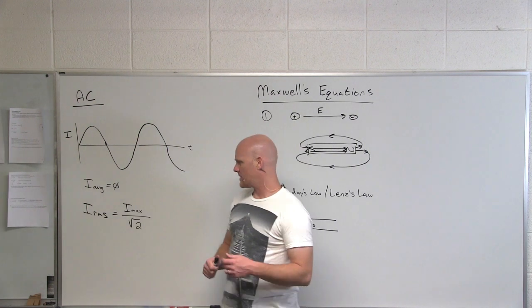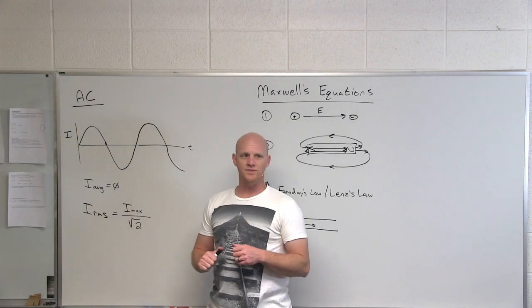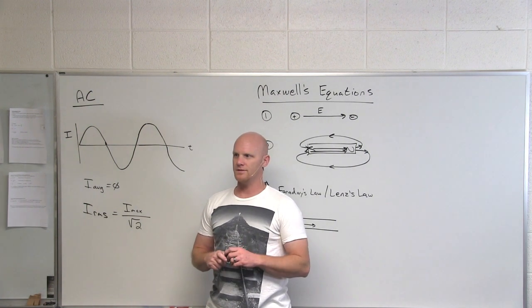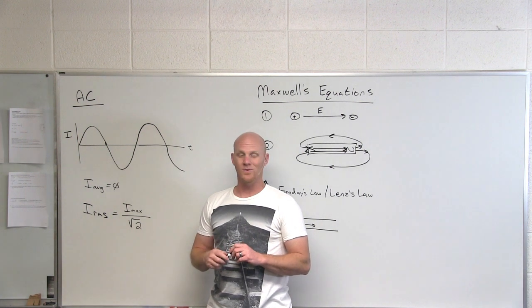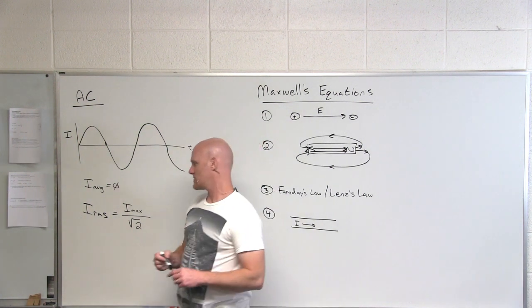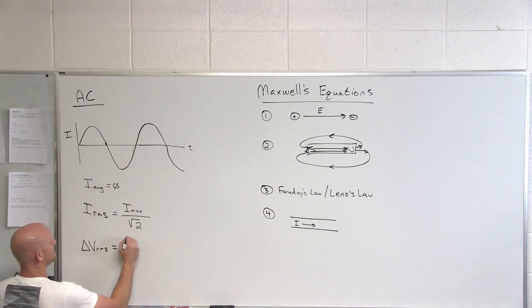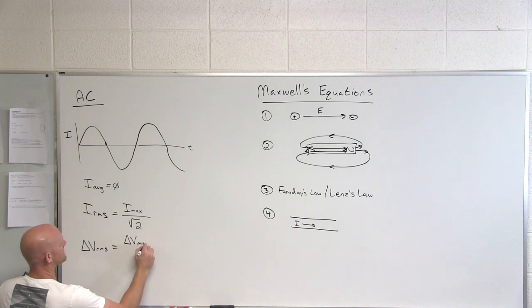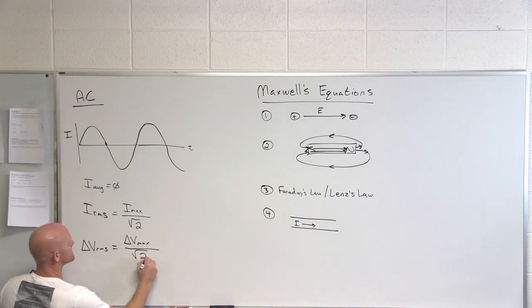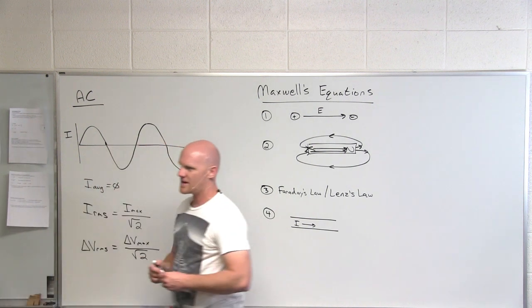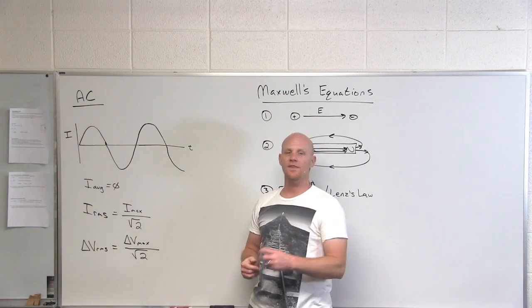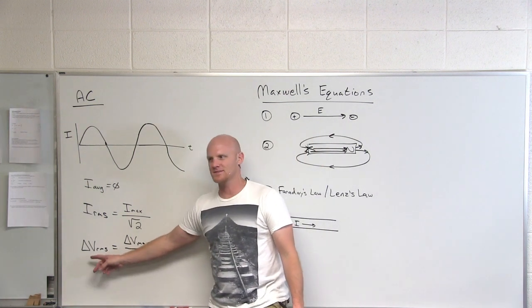So anybody know what the potential difference we typically have in our homes here in the U.S.? 120 volts. So it turns out you get a very similar equation for the potential difference here. RMS equals the potential max all over the square root of two. And so it turns out that 120 volts is not the maximum, it's the RMS that you get.